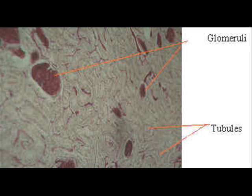Pancreas has characteristic light staining islets with ducts and septa. Thyroid has pinkish follicles which cannot be missed easily, and testes has thick tubular walls.